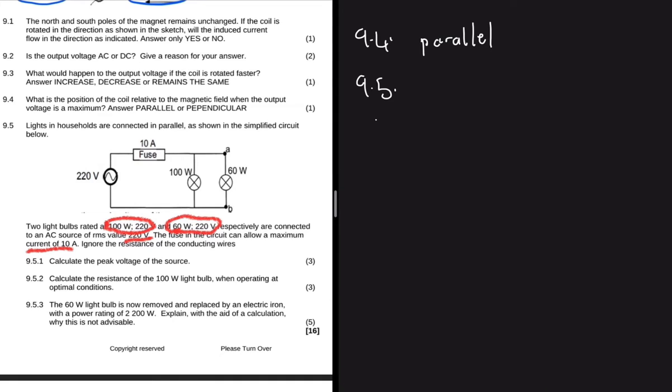So question 9.5.1 says calculate the peak voltage of the source. So what is peak voltage of the source? Peak voltage of the source is V_max. And then this 220 volts that we have here, it's our V_rms, root mean square voltage.